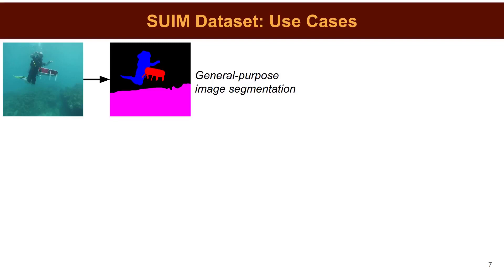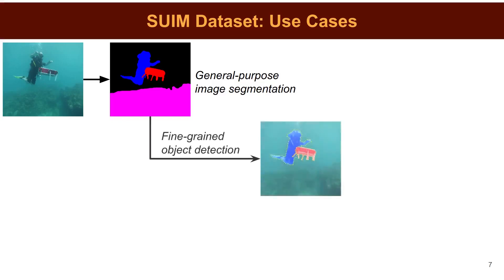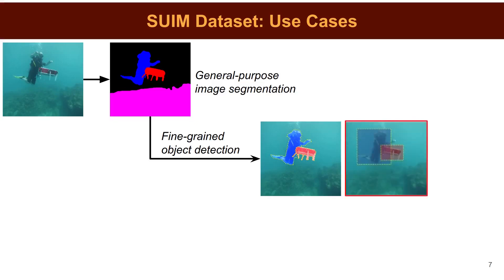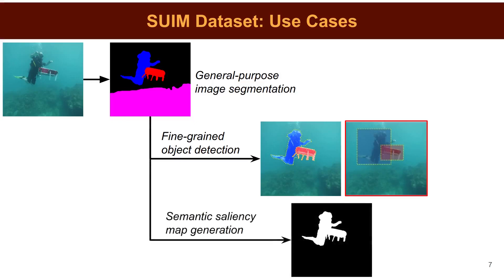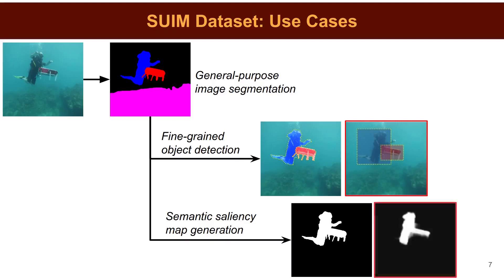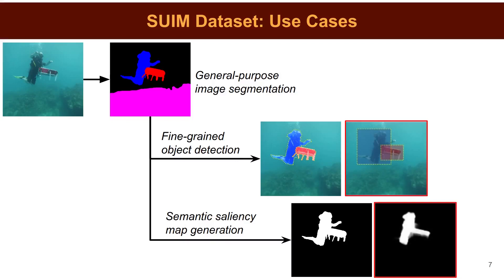In addition to general-purpose semantic segmentation, the SWIM dataset can be used to train deep visual models for pixel-level detection of specific objects such as human divers or robots. This provides more fine-grained object localization than standard bounding box detections. The SWIM dataset can also be used to train semantic saliency prediction models that pay attention to specific object categories of interest, whereas salient object detection datasets can be used to train class-agnostic models for foreground segmentation.